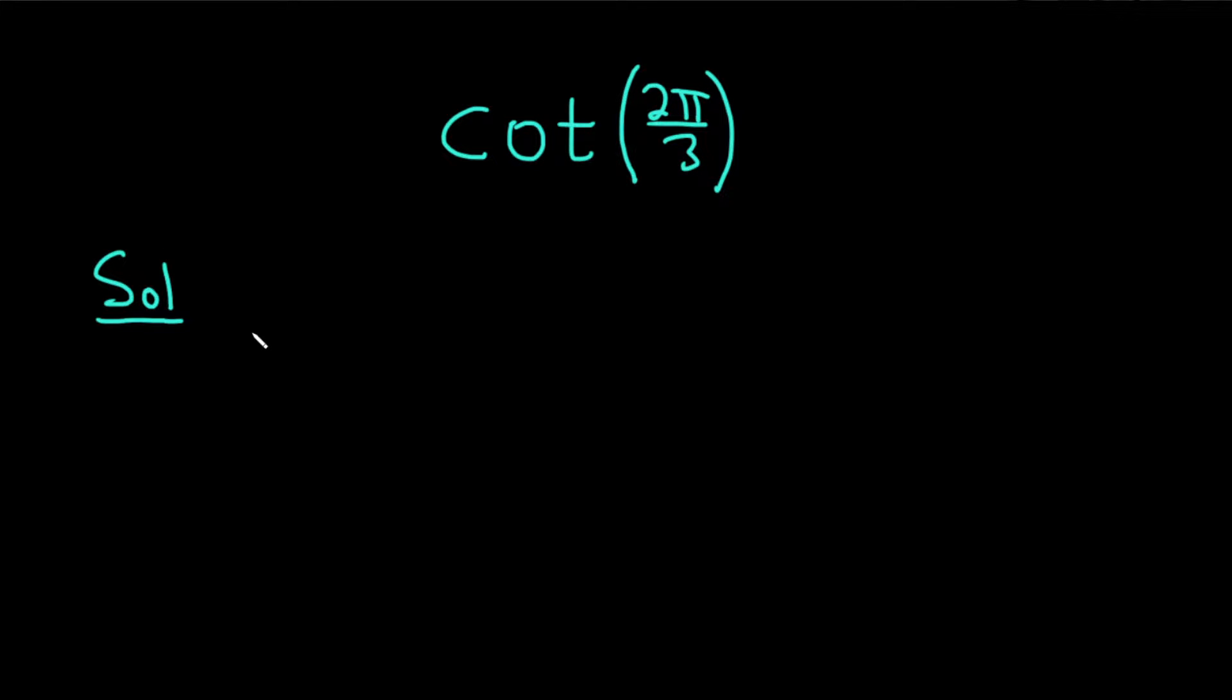So let's start by realizing that the cotangent of 2 pi over 3, well cotangent is really cosine over sine, so this is cosine of 2 pi over 3 over the sine of 2 pi over 3. So we just have to figure out these values and then we can plug them in and then we have the cotangent of 2 pi over 3.